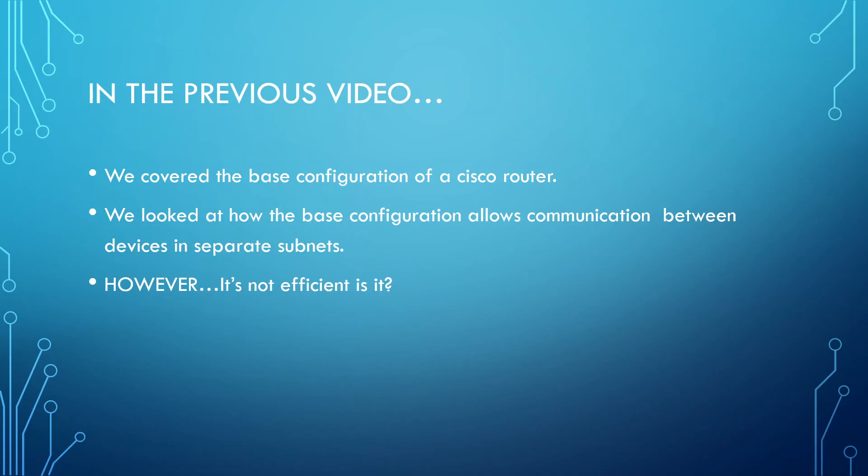However, the problem with this design is that it's not efficient. We need a separate link and a separate interface for every single VLAN. In my example it was okay because I only had two VLANs. However, if I had 10 VLANs, 50 VLANs, or 100 VLANs, the more VLANs I have, the more links I'm going to need between my switch and my router, and the more money that is going to cost. We're also going to have to purchase a router which is big enough to handle that many connections.